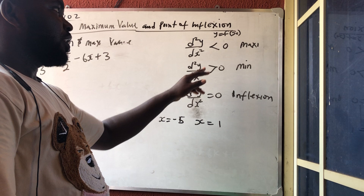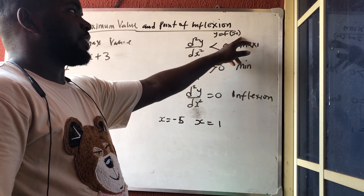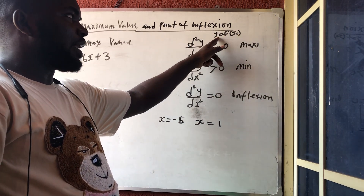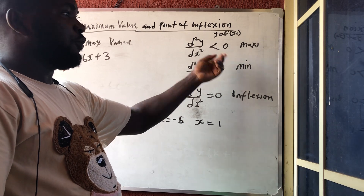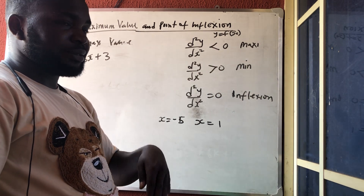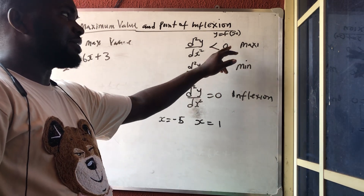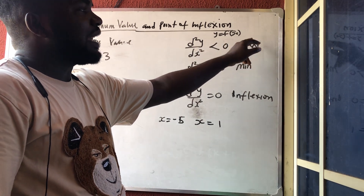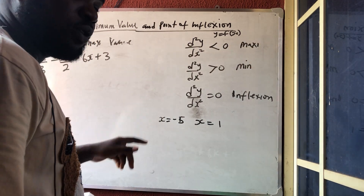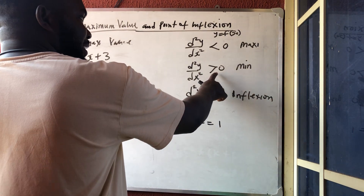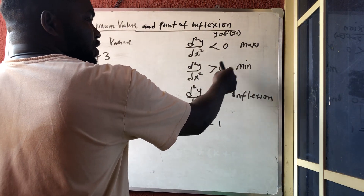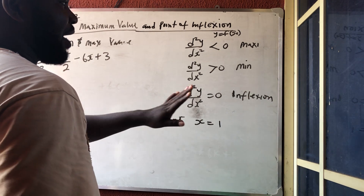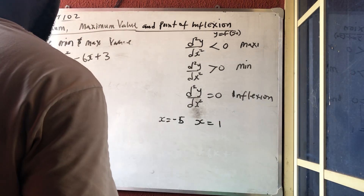You need to note that if y is a function of x, the second derivative of y — if it is less than 0, if you differentiate 2 times and the result is less than 0, we are going to get a maximum value. Less than 0 gives us maximum. Greater than 0 gives us minimum. And if it is equal to 0, we are having a point of inflection.